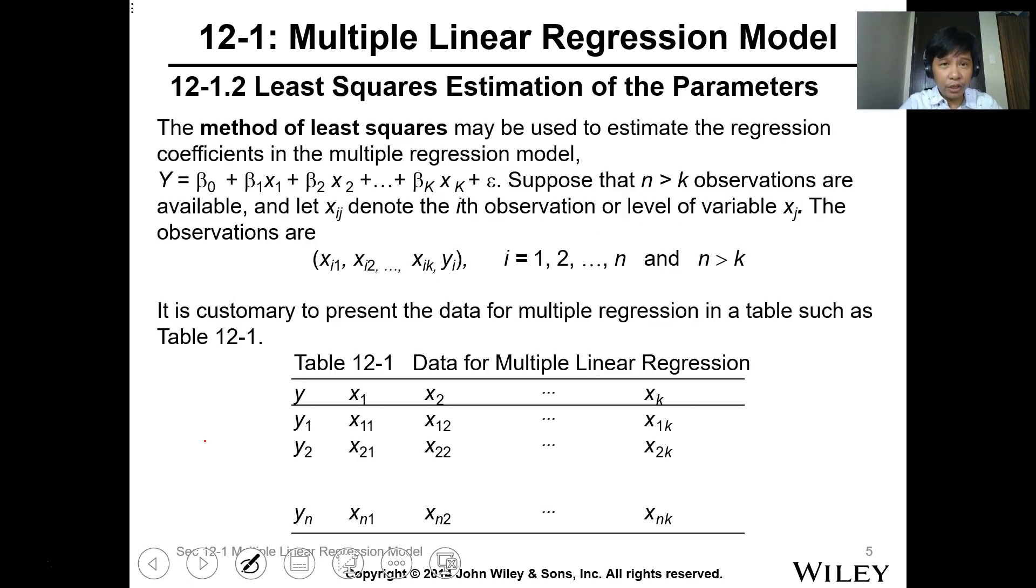For linear regression model, we also use the least square estimation of the parameter. The method of least squares may be used to estimate the regression coefficient in the multiple regression model. Suppose that n is greater than k observation are available. The number of samples should always be greater than your number of variables for the observation.